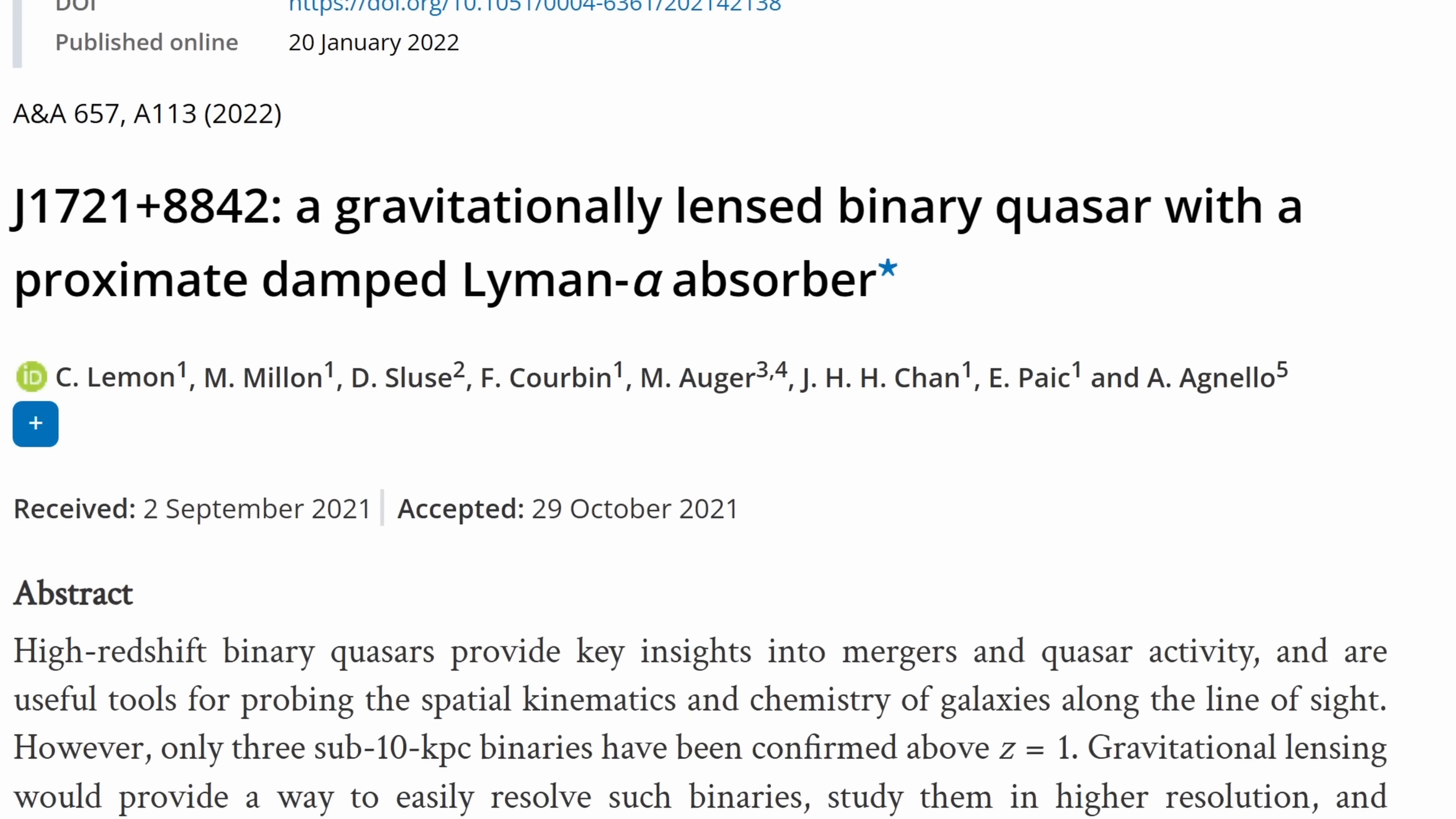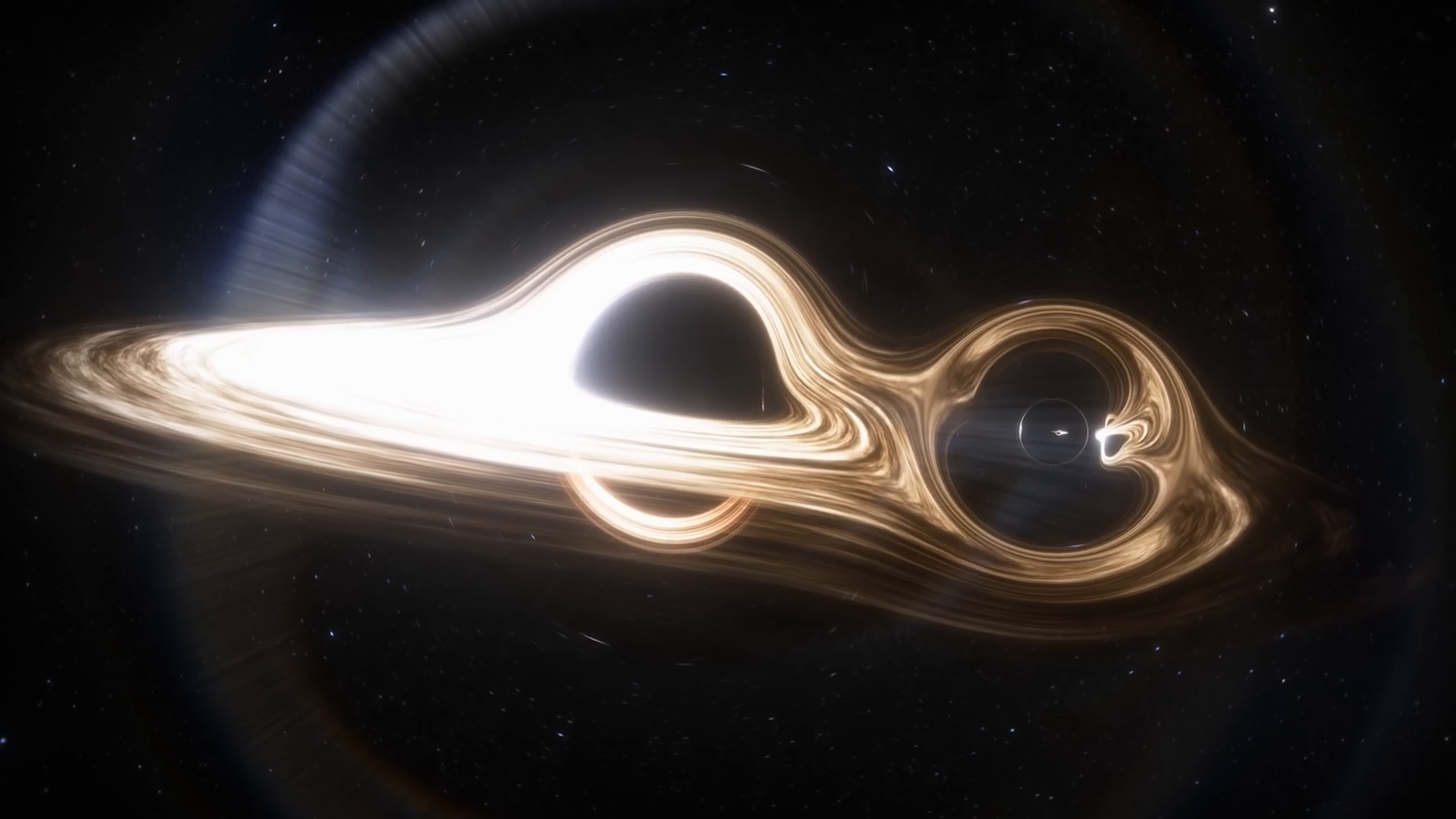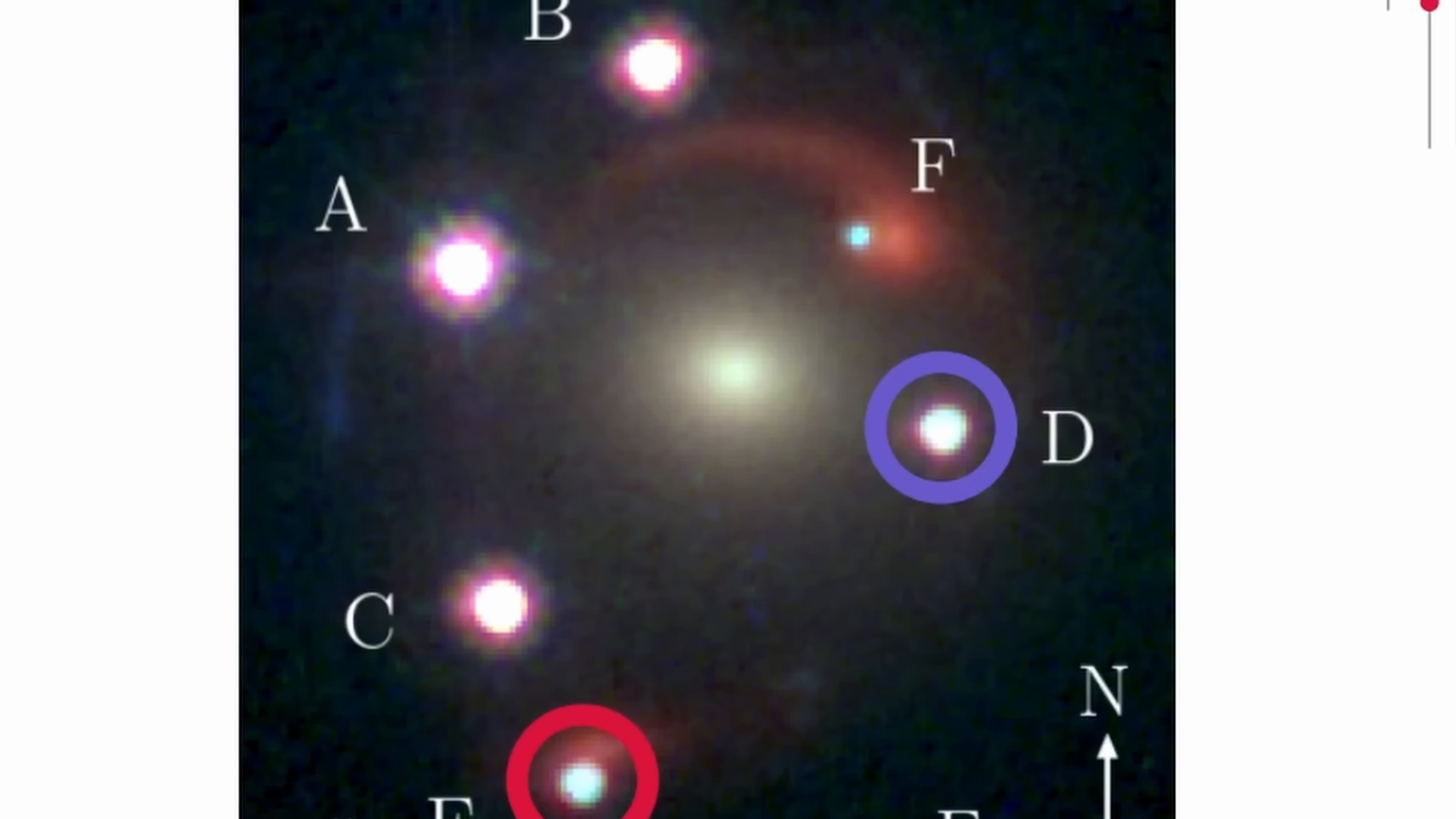We have a very bright, very distant object, whose light creates four individual points as it's bent by some kind of a mass between us and this object. But in 2021, an additional study, and here we're talking about this study by Lemon and his team, suggested that this could be some kind of a binary object or even a binary quasar with essentially two supermassive black holes very close to each other, possibly even orbiting, that produced these six points.